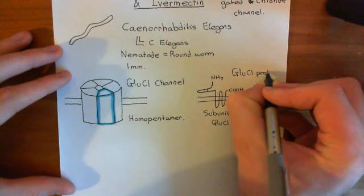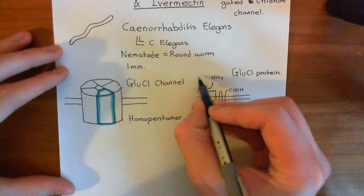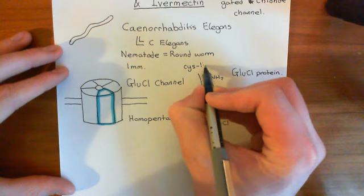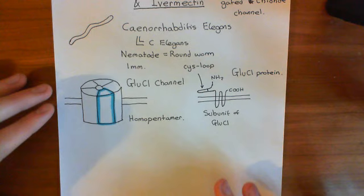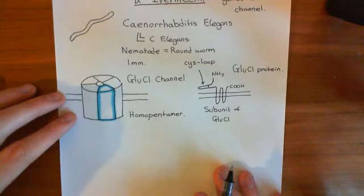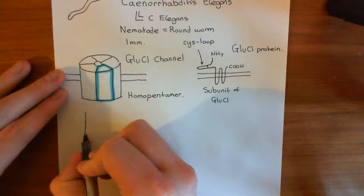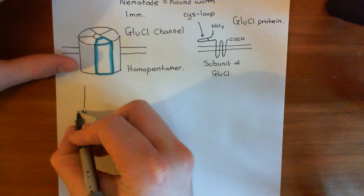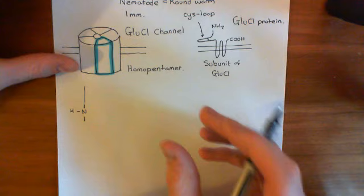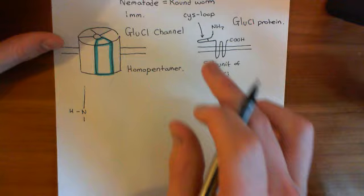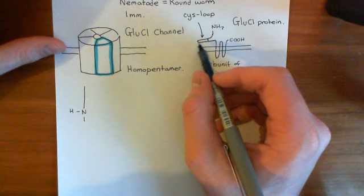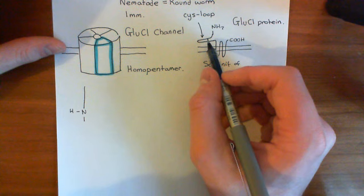Each GluCL protein has an extracellular cis-loop. The cis-loop is a loop in the polypeptide structure held together by a disulfide bridge between two cysteine amino acids on the two opposing strands of the loop. On each strand there is a cysteine amino acid, and the two cysteines form a disulfide bond which holds the two opposing strands together.